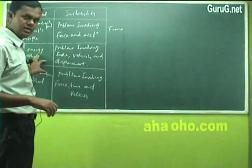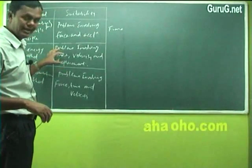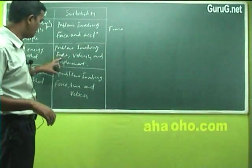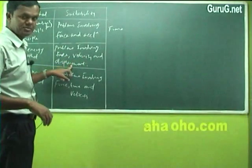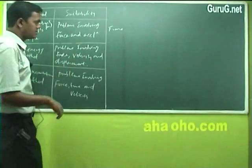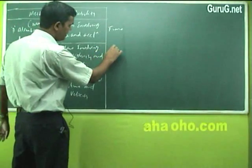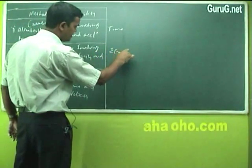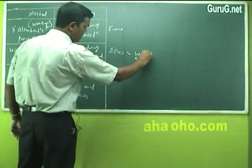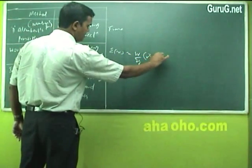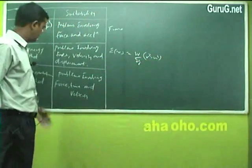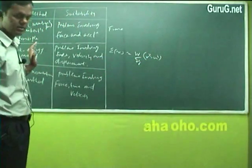The work energy method is used for solving problems involving force, velocity, and displacement. The equation is sigma F into S is equal to W by 2G into (V squared minus U squared) — that is initial minus final velocities. That is your use of work energy method.